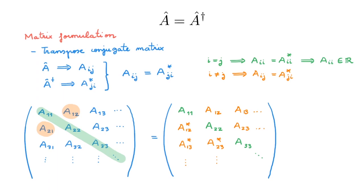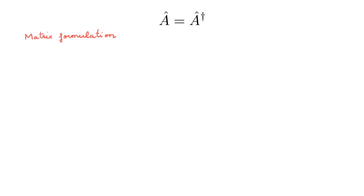What we found about Hermitian operators in matrix form is true in any basis. However, since the eigenstates of a Hermitian operator can themselves form a basis, a natural question is whether there is anything special about writing the operator in its own eigenbasis. The answer has tremendous importance in quantum mechanics and features prominently in what happens when you measure the physical property associated with the operator.